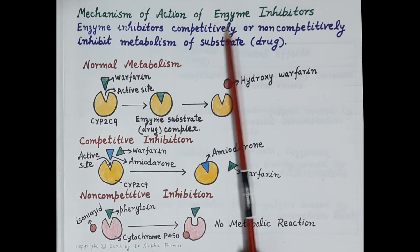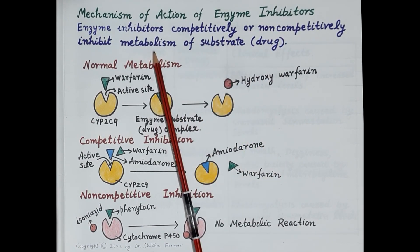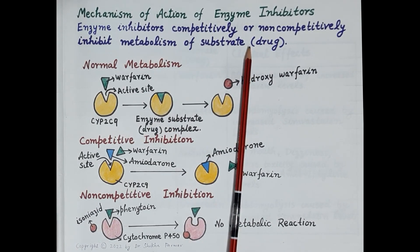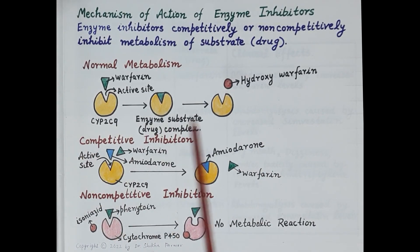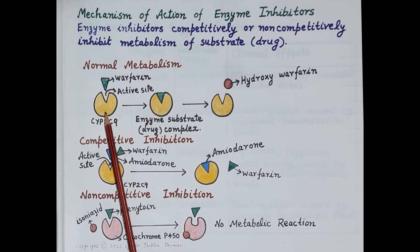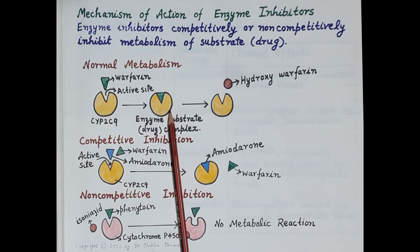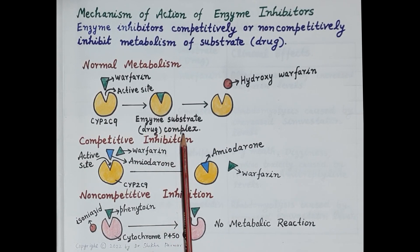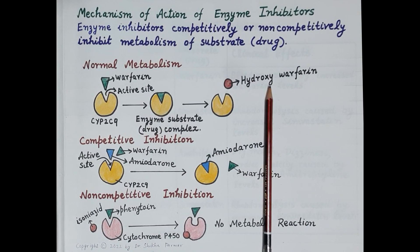Enzyme inhibitors primarily competitively or non-competitively inhibit metabolism of the substrate drug. Looking at this figure showing normal metabolism of warfarin: the enzyme is cytochrome P450 2C9, and the substrate is warfarin, which binds to the active site. The enzyme forms a complex with warfarin called the enzyme-substrate drug complex, and then metabolizes warfarin to produce hydroxywarfarin.